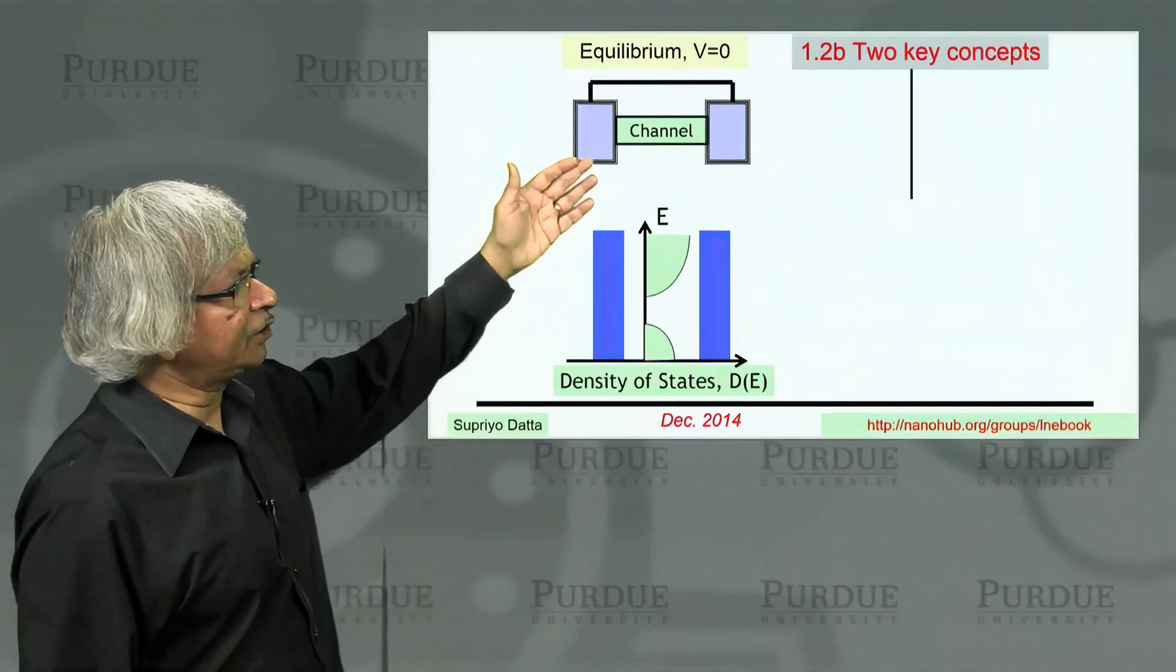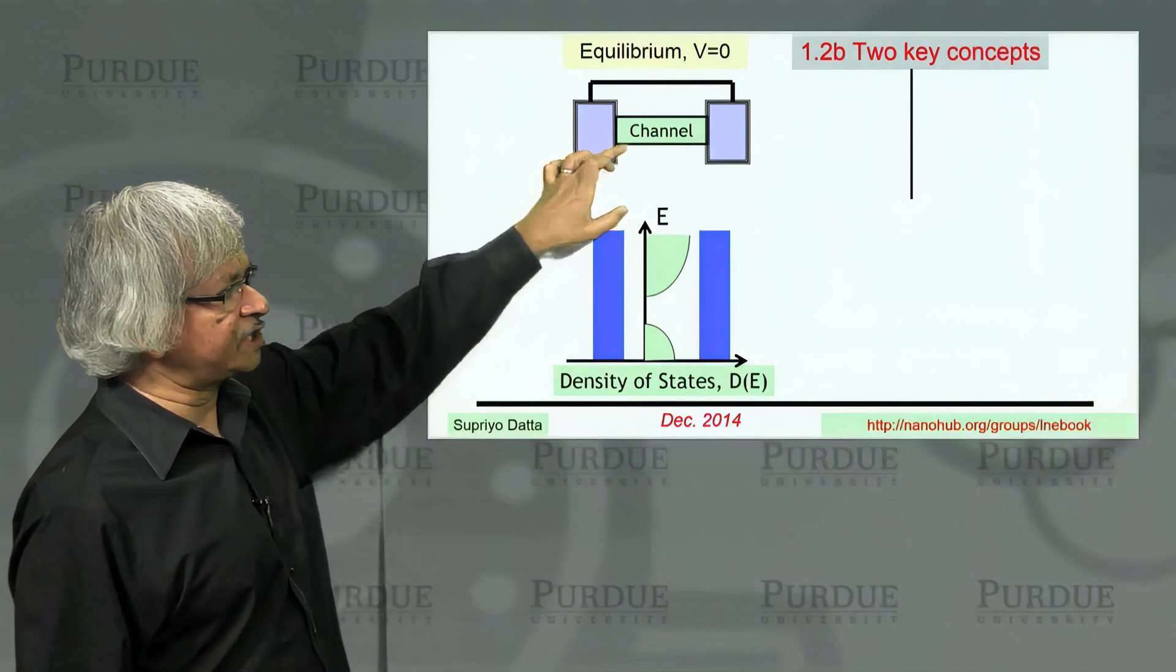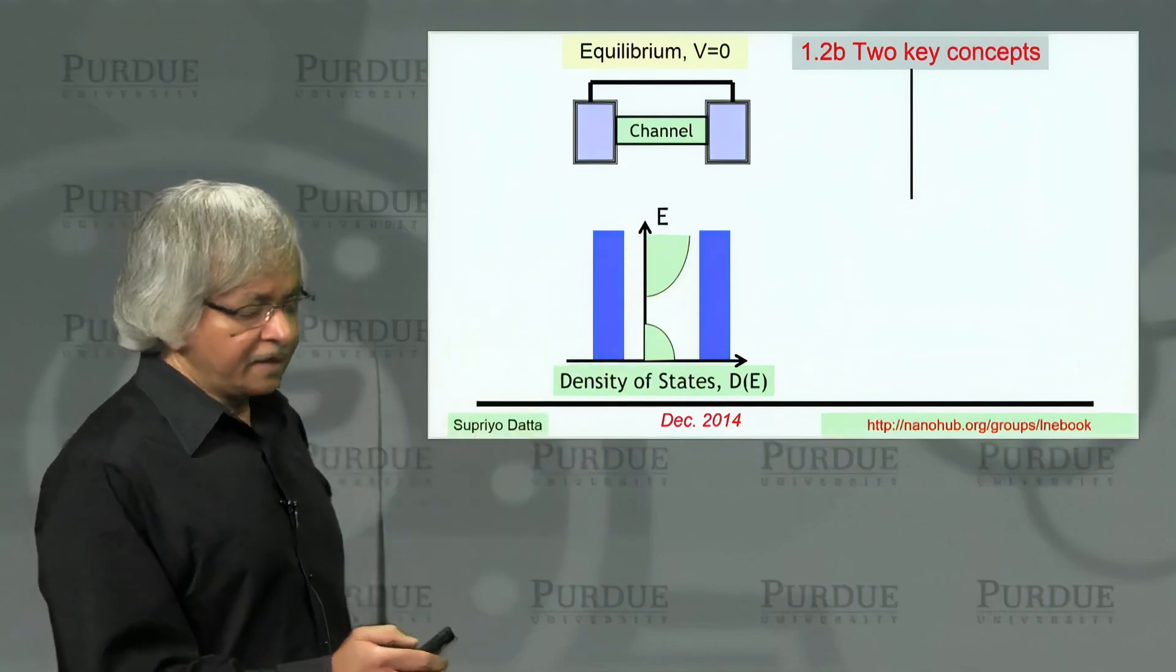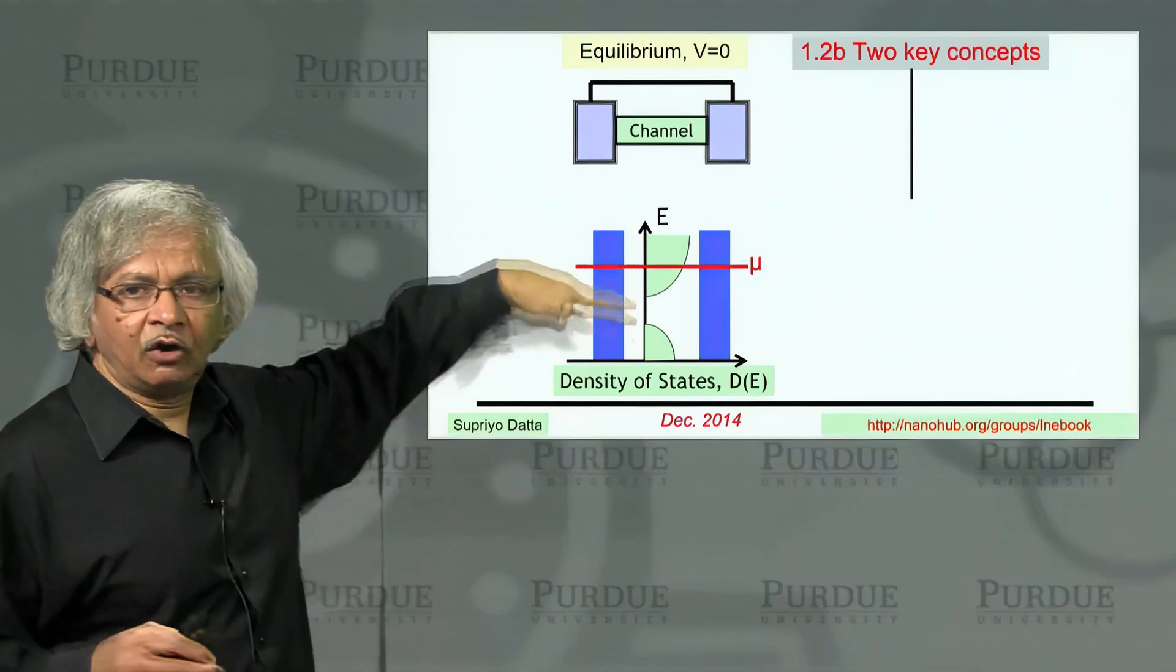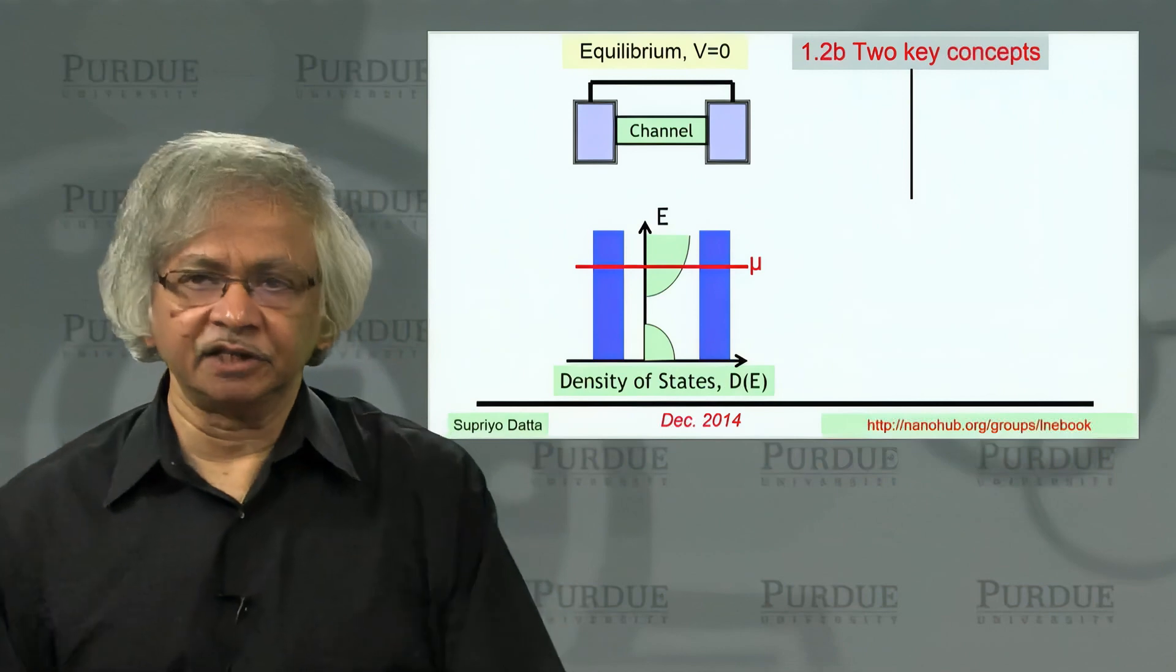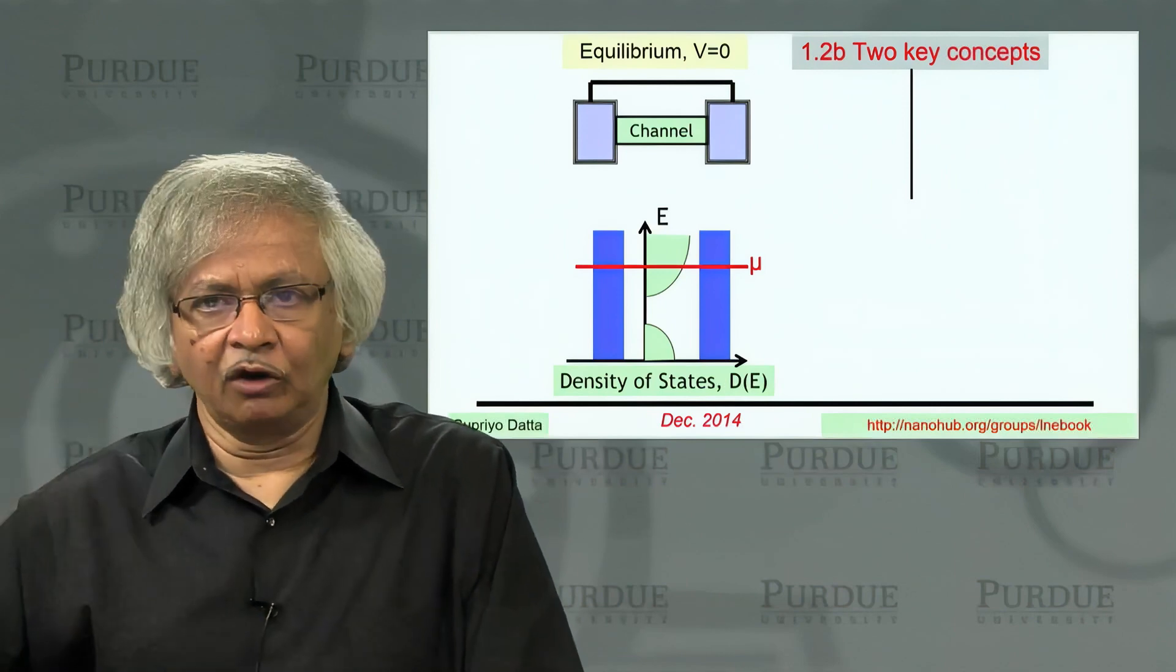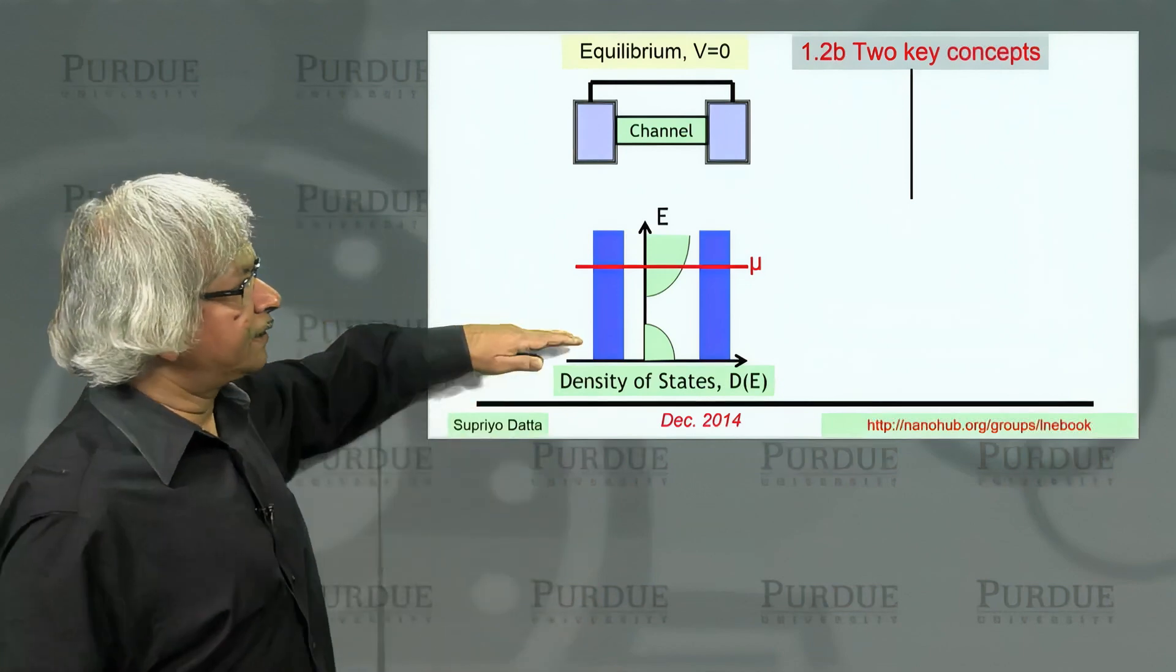You have the density of states in the channel and in the contacts. Overall at equilibrium, there is a level up to which all the states are filled. As I explained in the introductory lecture, electrons naturally want to go to the lowest energy state. But because of the exclusion principle, they can't all go into the lowest one. So instead, they fill up a lot of states. If you had a million electrons, they would fill up like a million states.